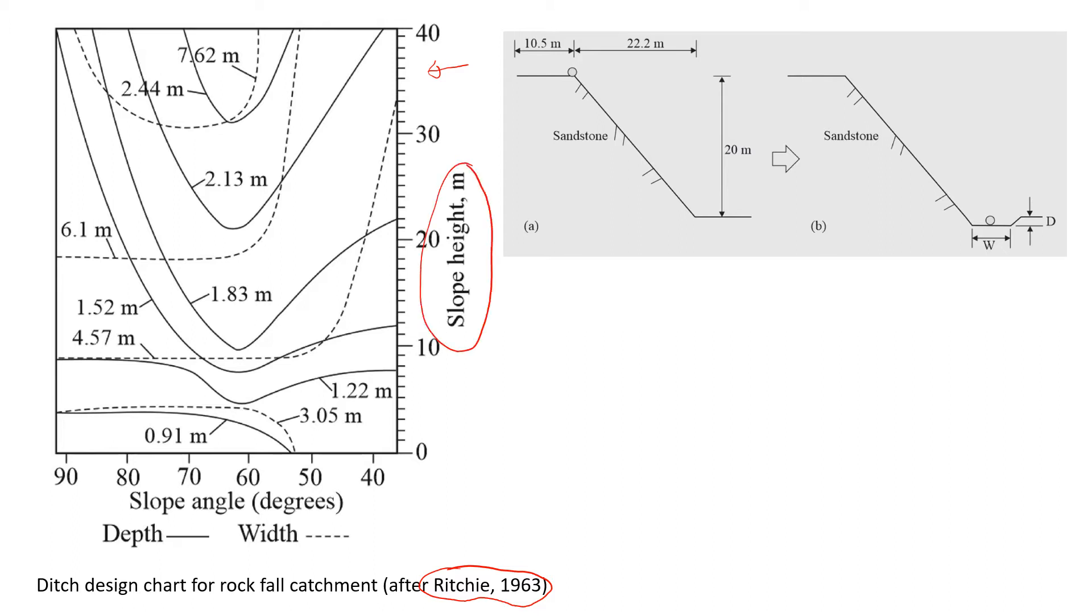For this chart we use slope height, so this is what we need to estimate during site investigation, and we can also estimate slope angle that will be very useful to design this catchment. Let's look at this example. It's a little bit simple but it will show you how the chart works.